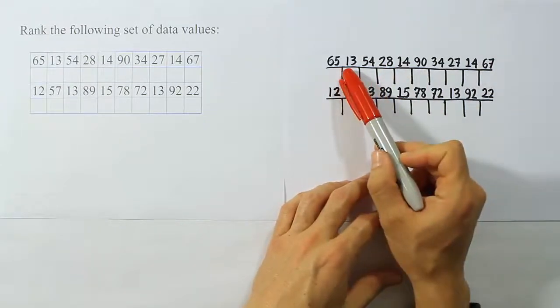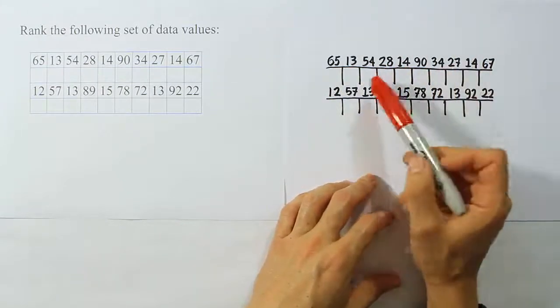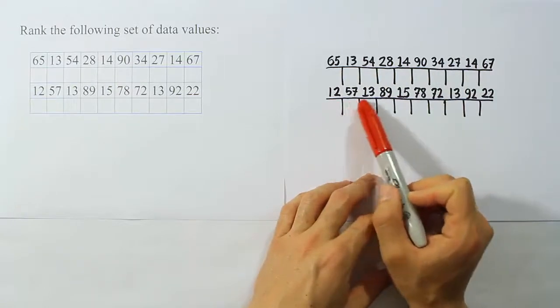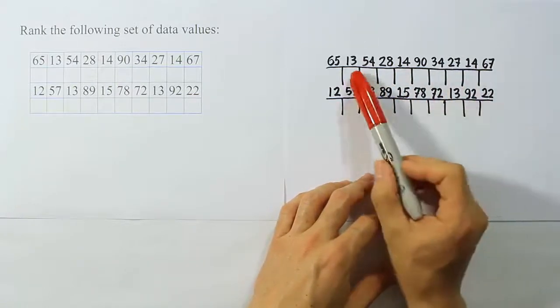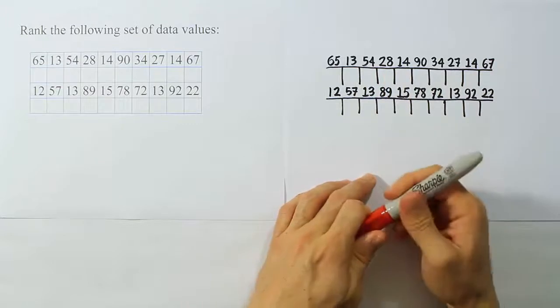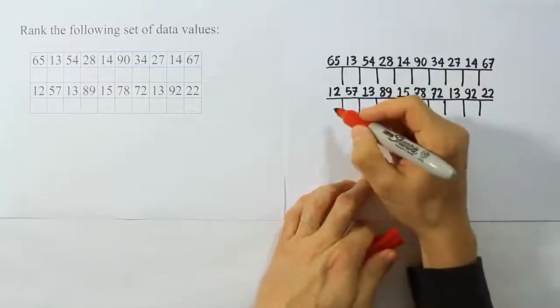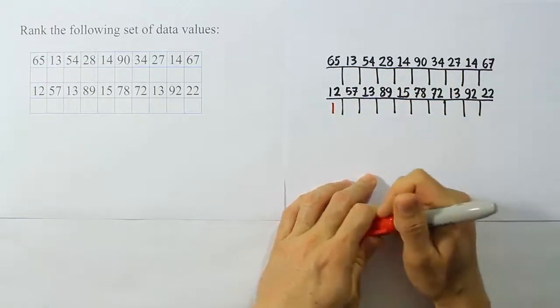Now, I see some numbers in the teens here. Do we have anything smaller than that? Well, 12 is real small. Any number smaller than 12? I don't see any number smaller than 12. So I'm going to go ahead and give 12 the rank 1. That's going to be its rank, number 1.